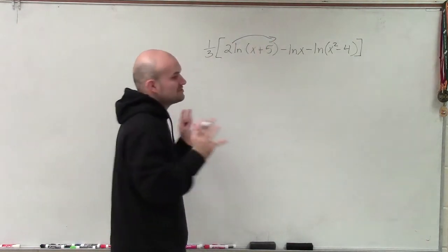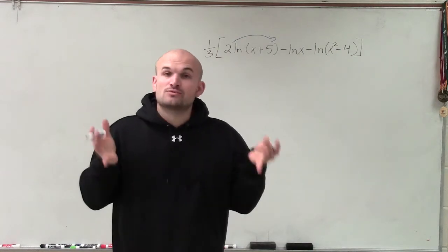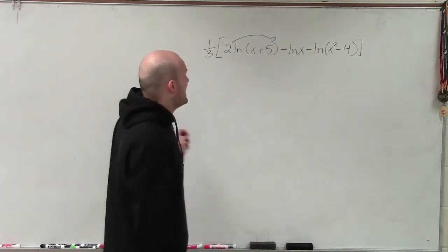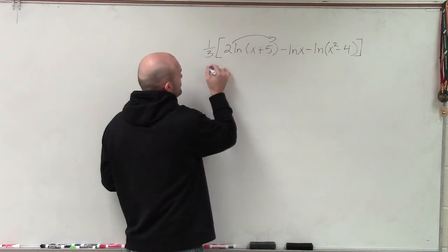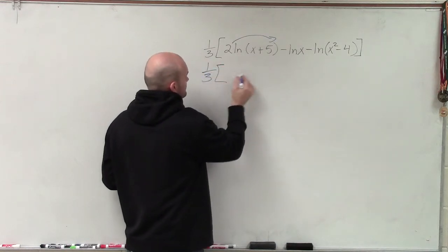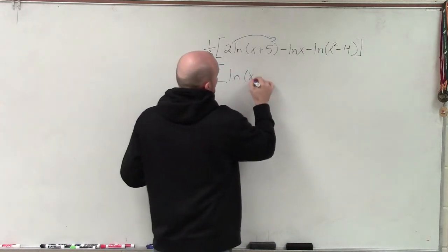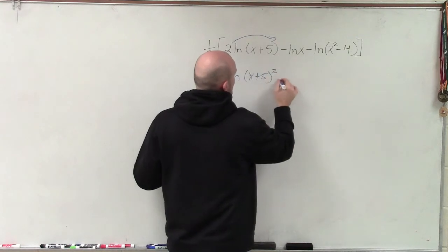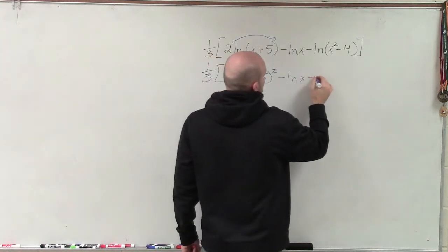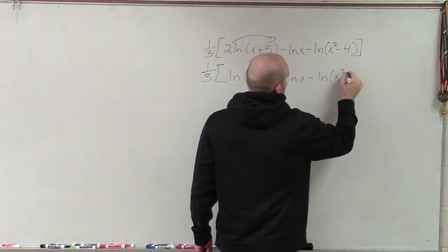The first thing I'm going to do is, when I'm looking at this, I want to work using my order of operations, work inside the parentheses first. And I'm going to use the power rule by bringing my 2, my exponent, up first. So therefore I'll have ln of x plus 5 squared minus ln of x minus ln of x squared minus 4.